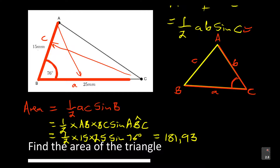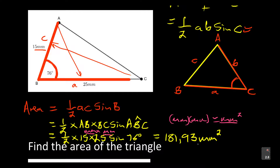Now look at the units. We are dealing with millimeters, so you need to express your answer in the relevant units. The area will be in millimeters squared, because we multiplied 15 millimeters by 25 millimeters — millimeters times millimeters gives millimeters to the power of two. That's why the units are millimeters squared.